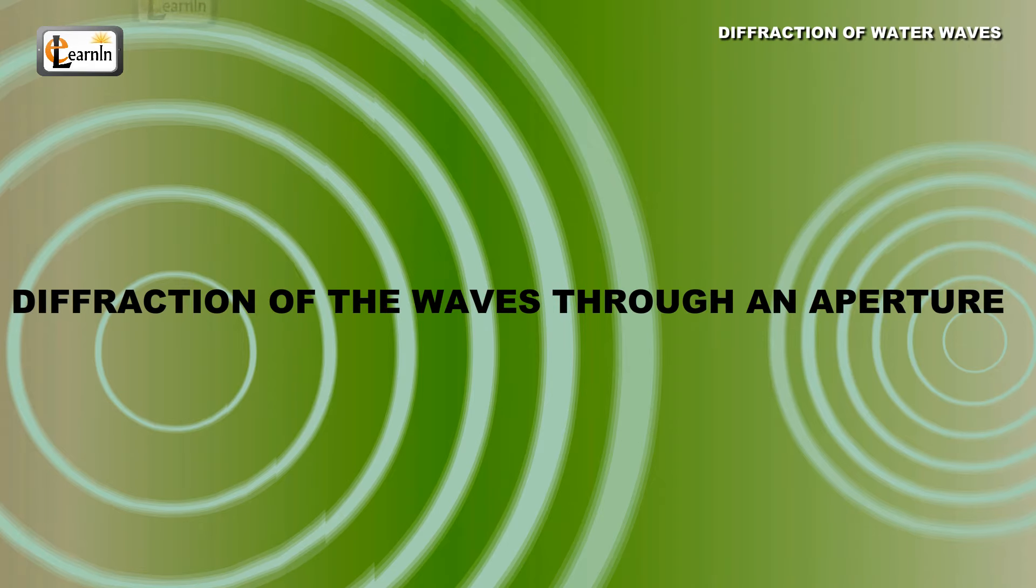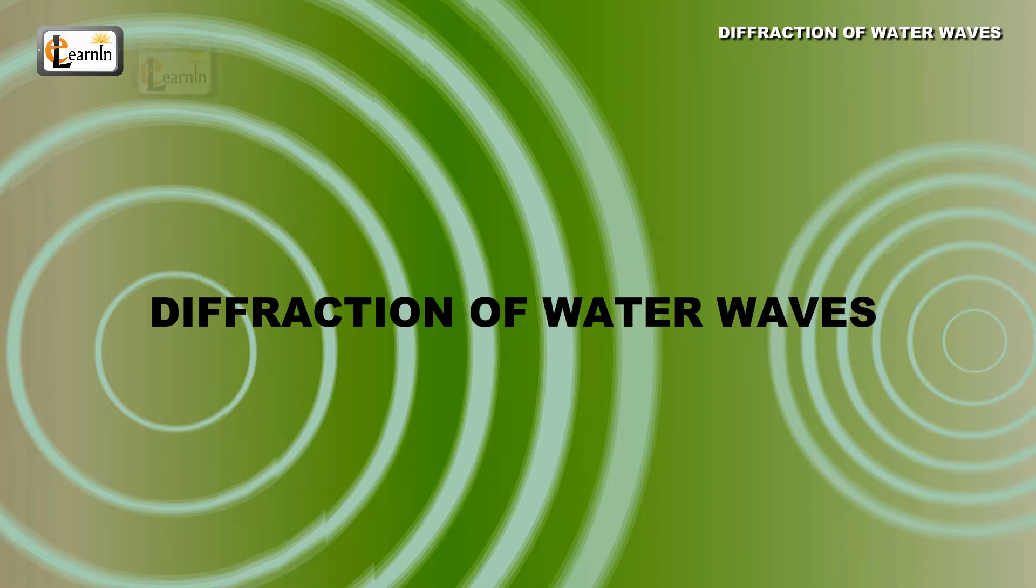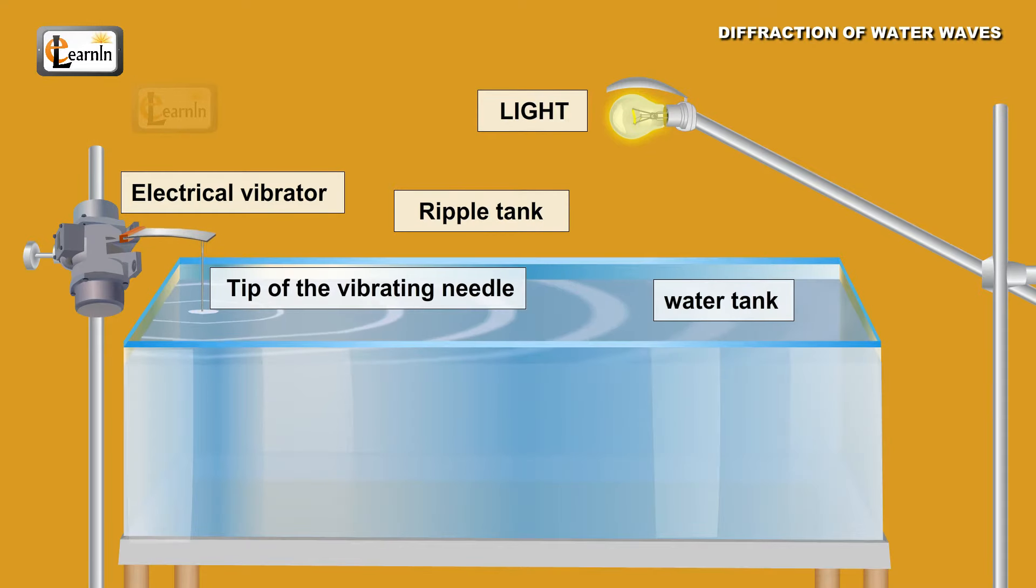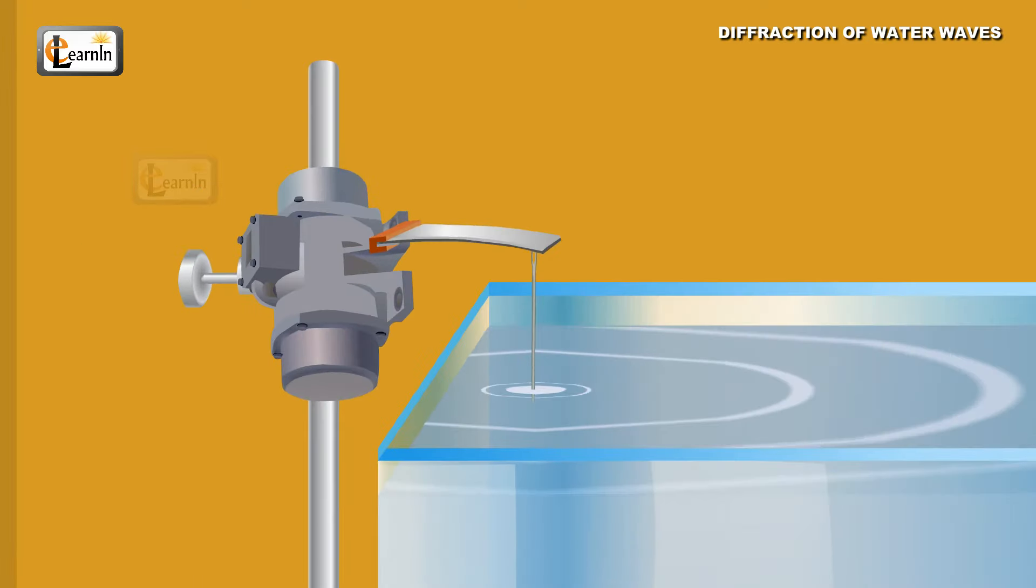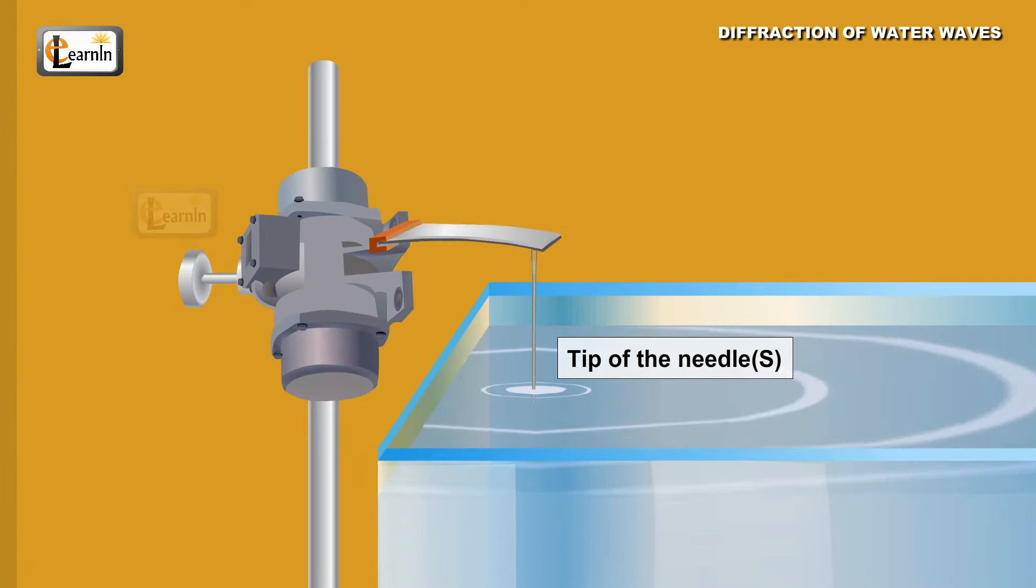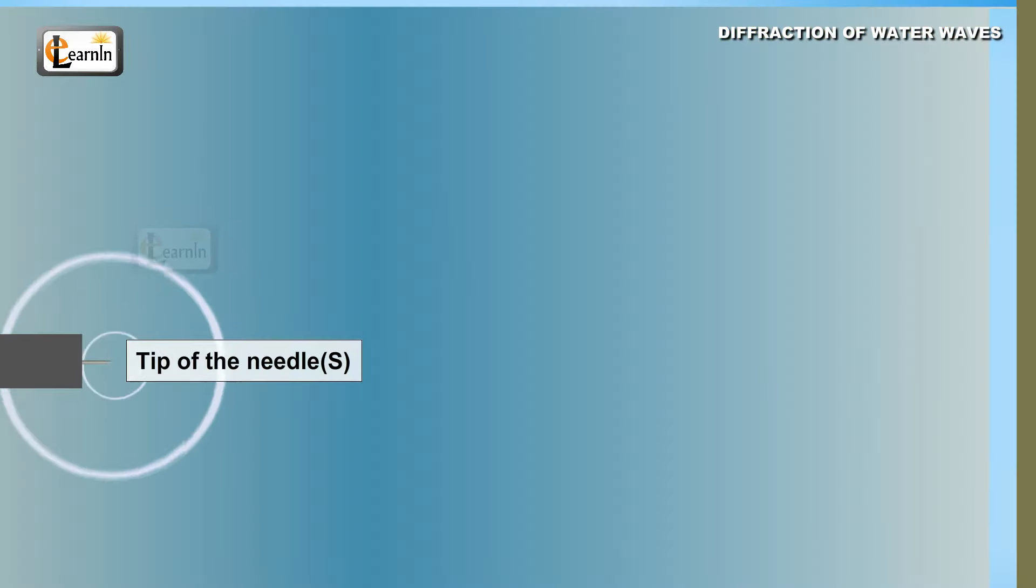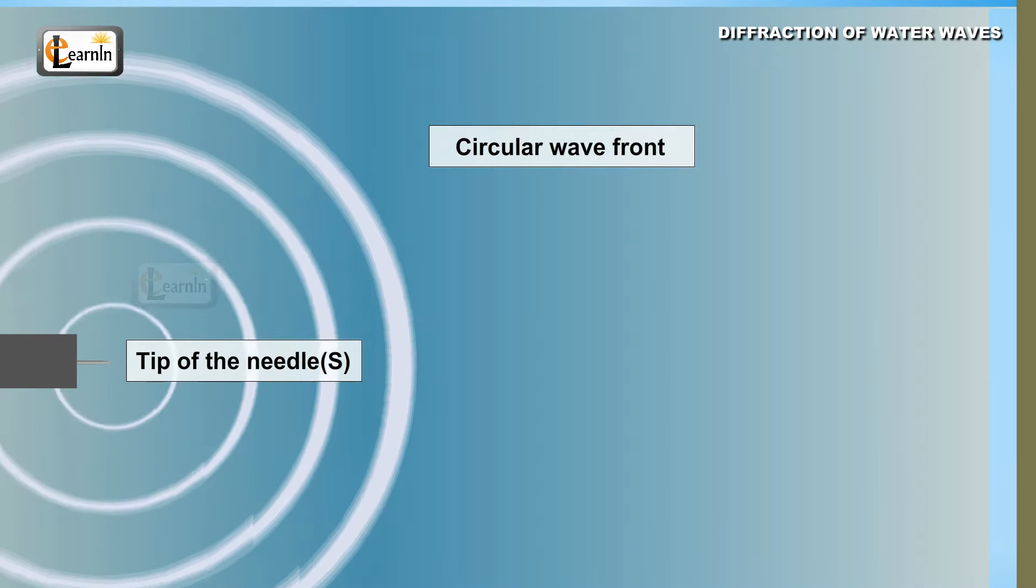Diffraction of the waves through an aperture. Diffraction of water waves. Consider the ripple tank arrangement. Let the tip of the needle, which is connecting the electrical vibrator, which produces circular wavefront, be S.